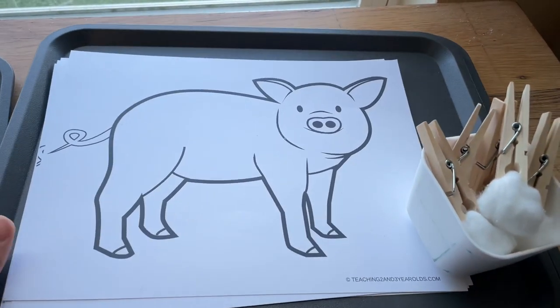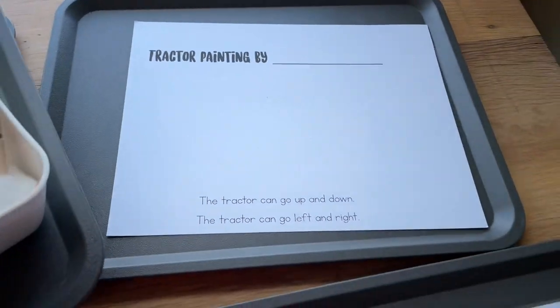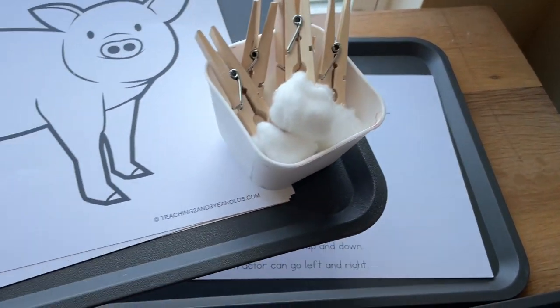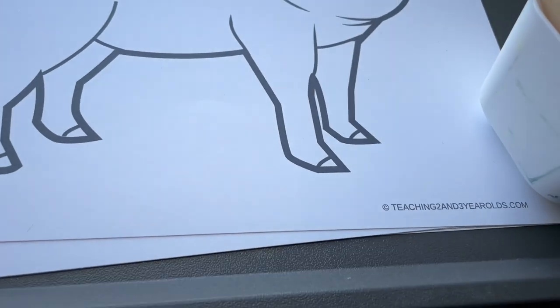We have some process art here, the muddy pigs, and then this one is the tractor painting where they'll roll the tractor into paint and paint that onto the paper with the tractor tires.